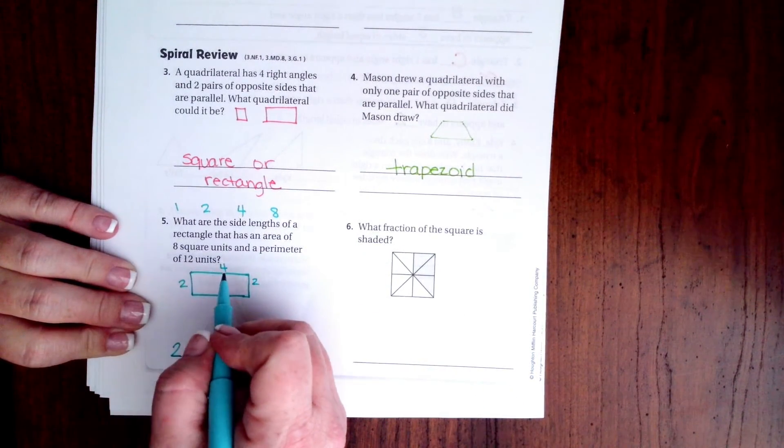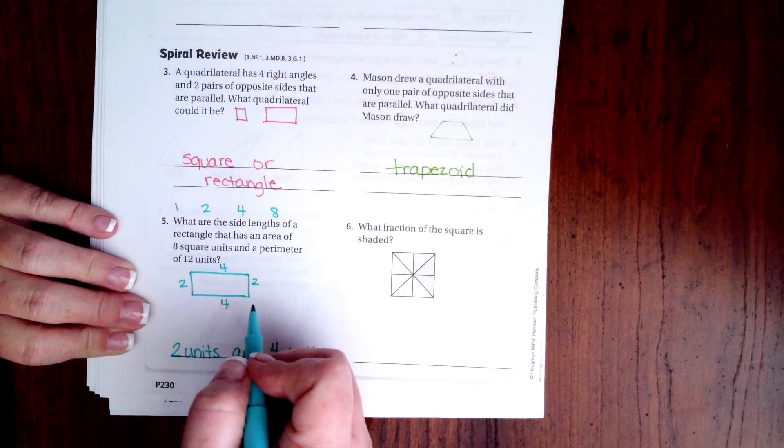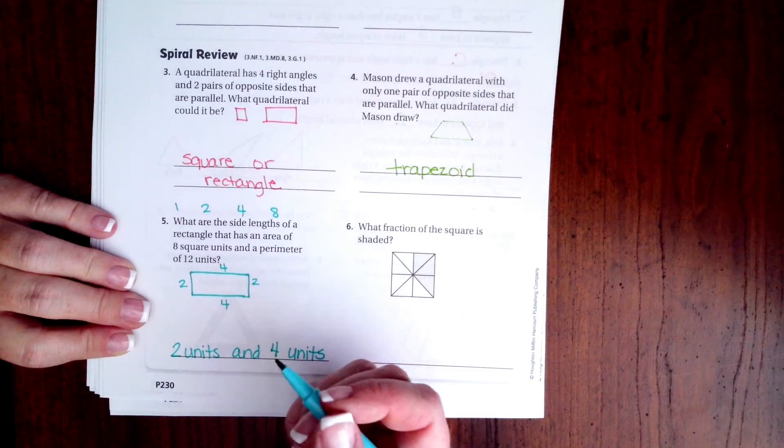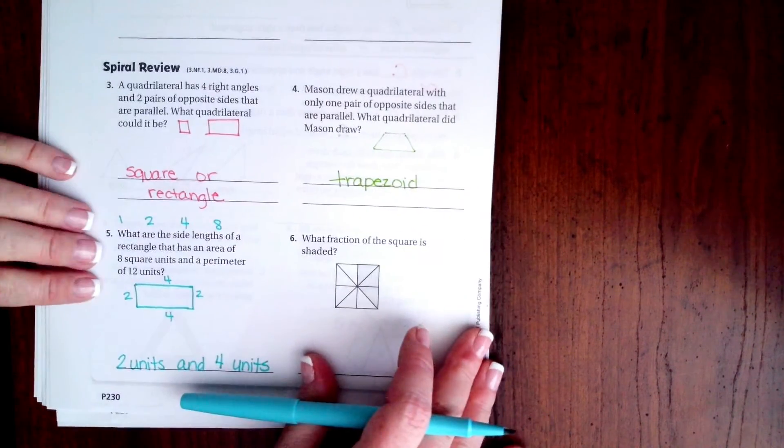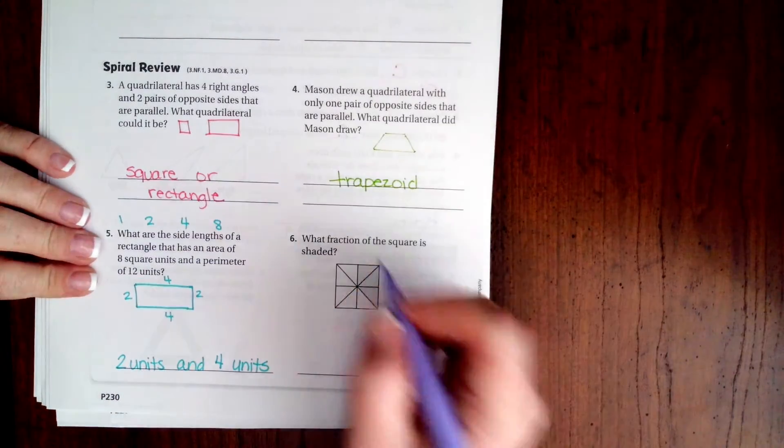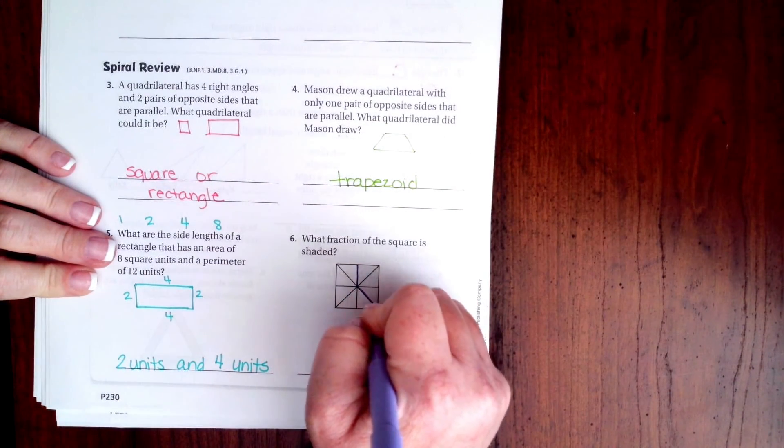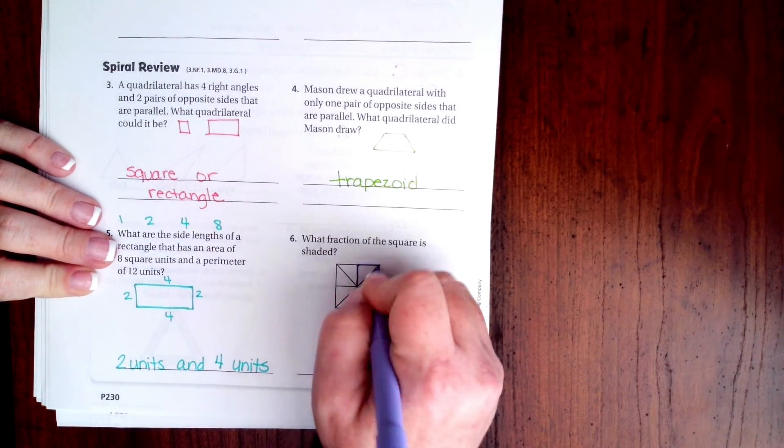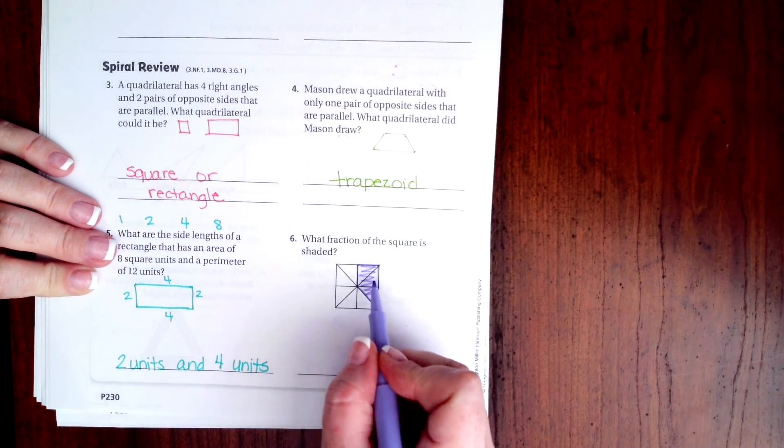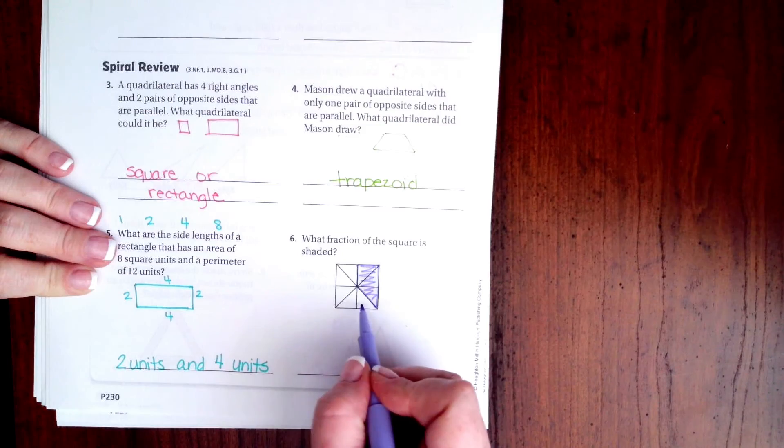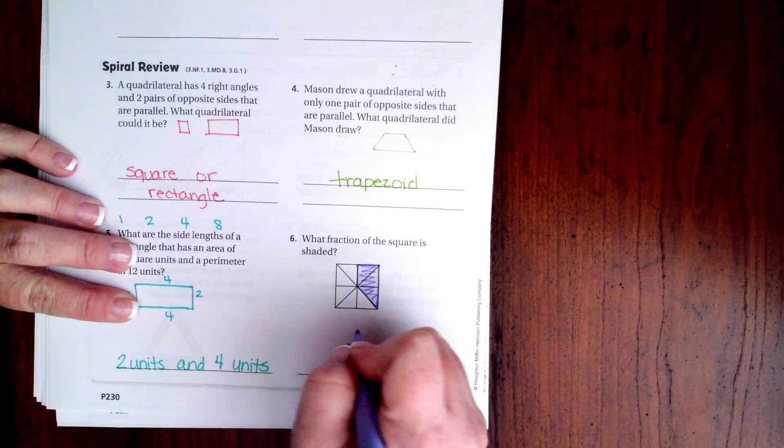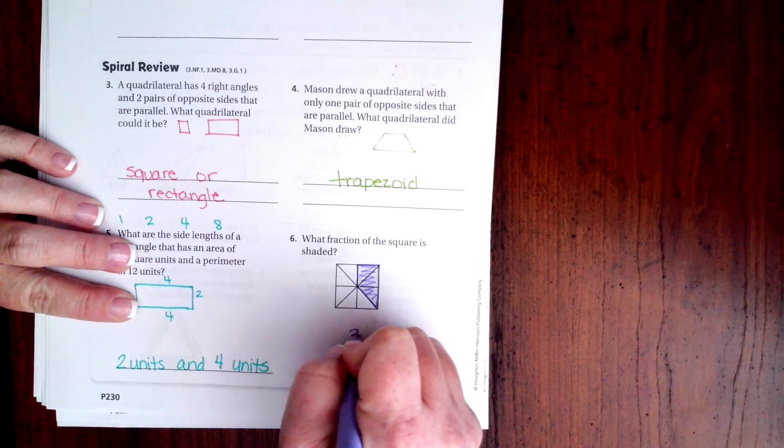If I did one and eight, that would be nine, and then one and eight again would be another nine. That's a perimeter of eighteen, not twelve. So what fraction of the square is shaded? Well, I know you guys can't really see, but I have one, two, three, four, five, six, seven, eight all together, that's my denominator, and three of those are shaded, that's my numerator.